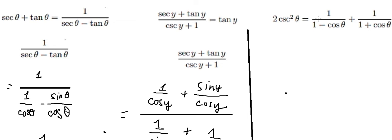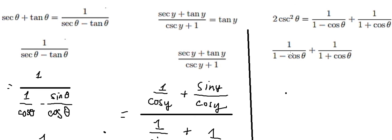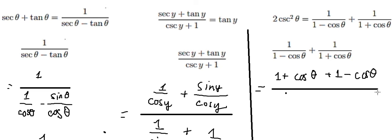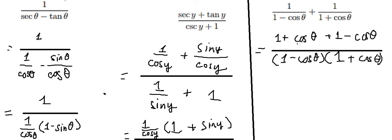Now let's go to the last question. We have one minus cosine theta over one plus cosine theta. I will choose this identity here. We apply a common denominator — for the first term we multiply by one plus cosine theta, and for the second by one minus cosine theta. On the denominator we get one minus cosine theta times one plus cosine theta. Simplifying the numerator gives us two.